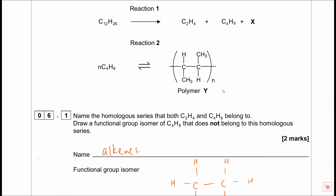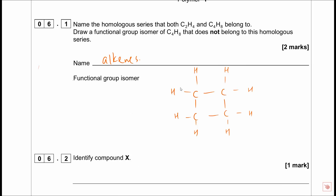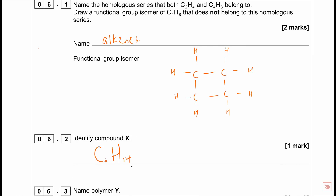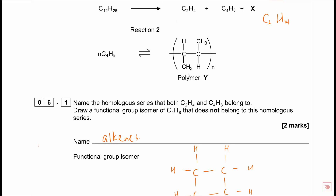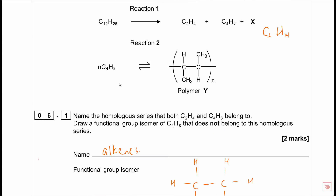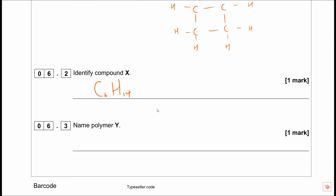Identify compound X. Looking at the cracking scheme: C₁₂H₂₆ gives C₂H₄, C₄H₈, and compound X. Carbons: 2 + 4 = 6, so X must be C₆. Hydrogens: 4 + 8 = 12, need 14 total, so X = C₆H₁₄. Name polymer Y - made from C₄H₈ (but-1-ene or but-2-ene). Polymer Y is poly(but-1-ene) or poly(but-2-ene) - important to specify which butene. State one reaction condition for thermal cracking at 750°C: high pressure.